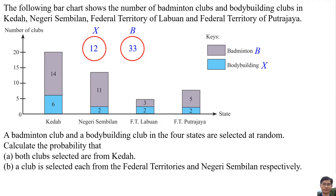Calculate the probability that both clubs selected are from Kedah. The probability is 6 over 12 multiplied by 14 over 33, which equals 7 over 33.